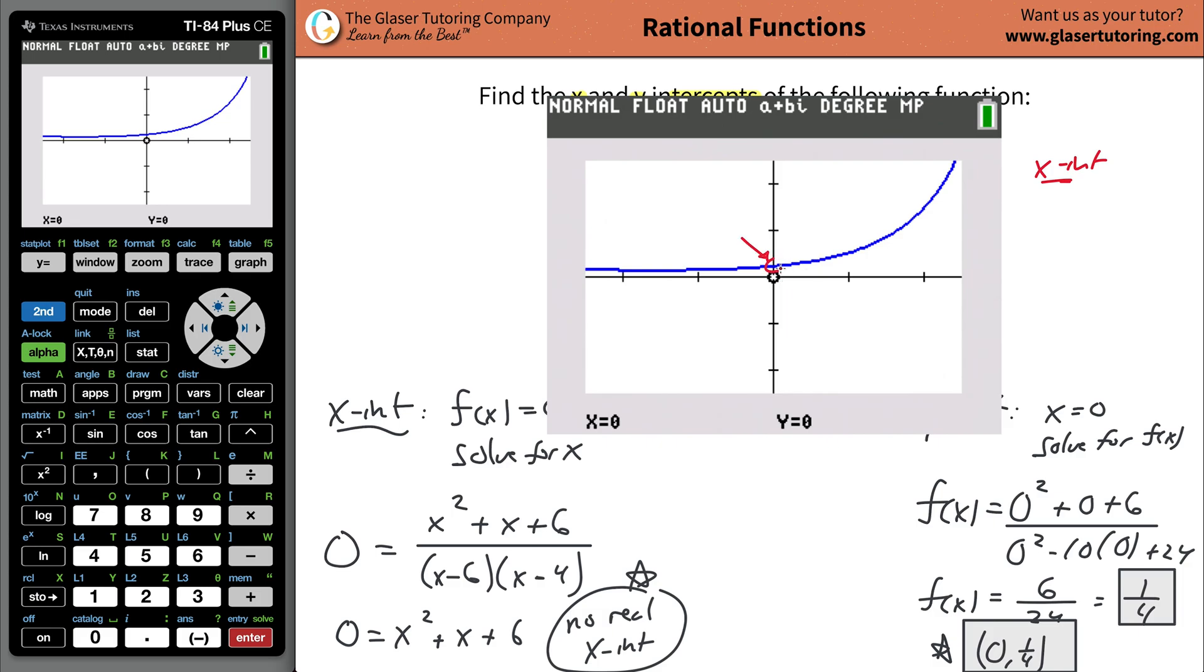Doesn't this look roughly like a quarter? If this is one unit and the half is here, that looks about halfway roughly. So that is the y-intercept, one fourth.